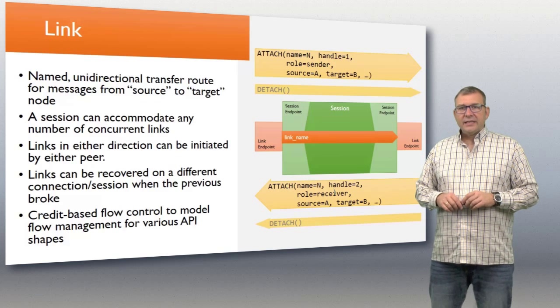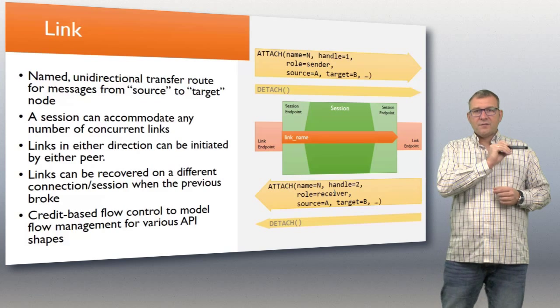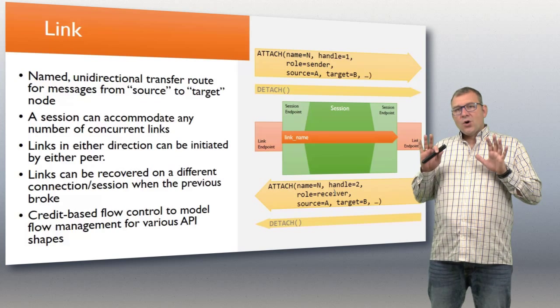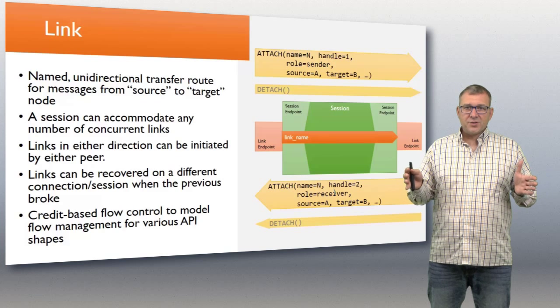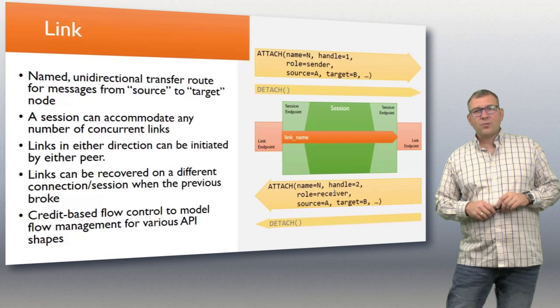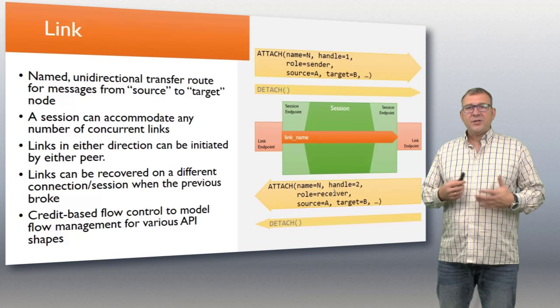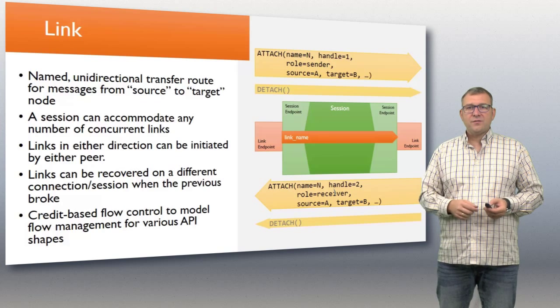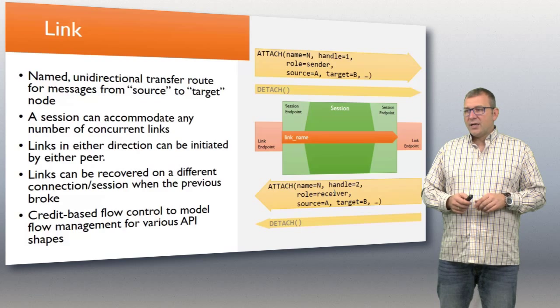What that gives you, what a link gives you, is a transfer route for messages in one way and then an acknowledgement route for messages in the other way. That's how disposition works and also how flow control works. Flow control on links is separate from the window-based control. The window-based control is something that happens under the covers. The links are having a separate flow control model that's also credit-based, which is more for the application, more for the API shape and for modeling things like an individual receive or modeling continuous flows, which is also something I'm going to get to later.